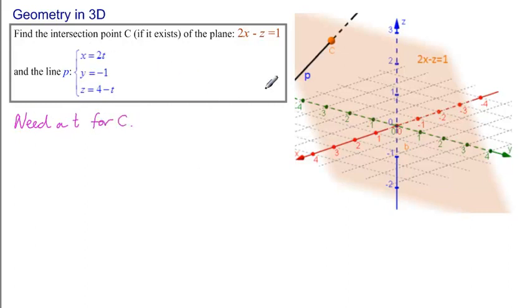On the other hand, C lies on the plane, so it has to satisfy this equation. So we will substitute x equals 2t here. y, there's no place to substitute, and z equals 4 minus t here. And we will have an equation in one unknown t, which we can solve. So let's do that.